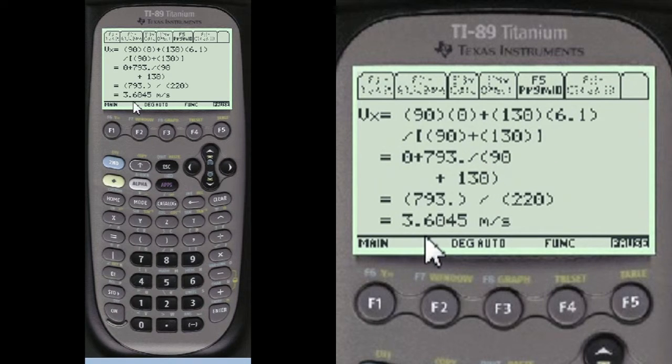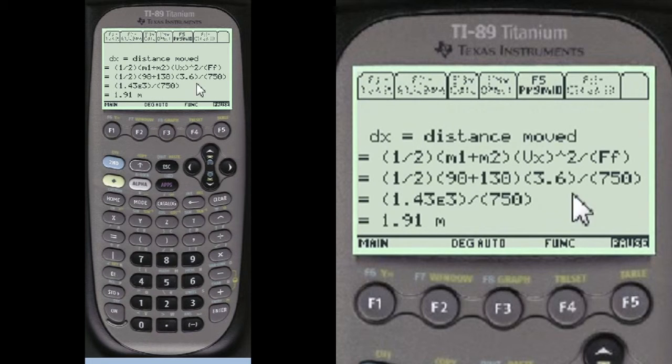Here's the answer after the computation, 3.6 meters per second. That's used in the distance formula right here. The answer is 1.91 meters. That's for how far they traveled after they were hit.